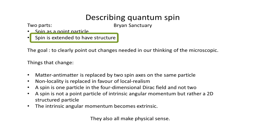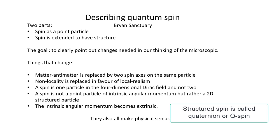The second part gives an extension of spin, which is new, and leads to surprising results. It gives a deeper and physically credible view of spin, a view which is mathematically sound. This spin, we call quaternion or q-spin, has structure, which replaces the point particle.